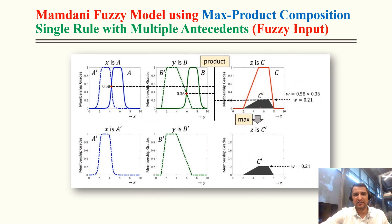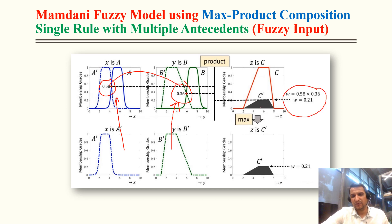For max-product with single rule and multiple antecedents: degree of compatibility is 0.58 after overlapping for X, and 0.36 for Y. We multiply both: 0.58 × 0.36 = 0.21. So we scale down the output by 0.21, giving the final output.